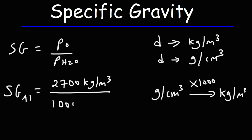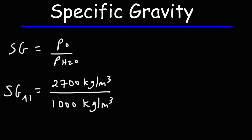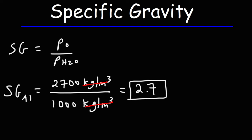The density of water is 1000 kilograms per cubic meter. So when you divide these two, notice that the units kilograms per cubic meter is going to cancel. This will give us a specific gravity of 2.7.